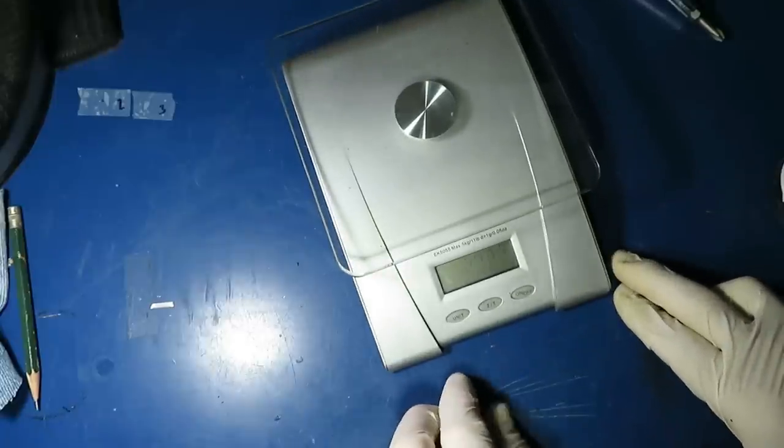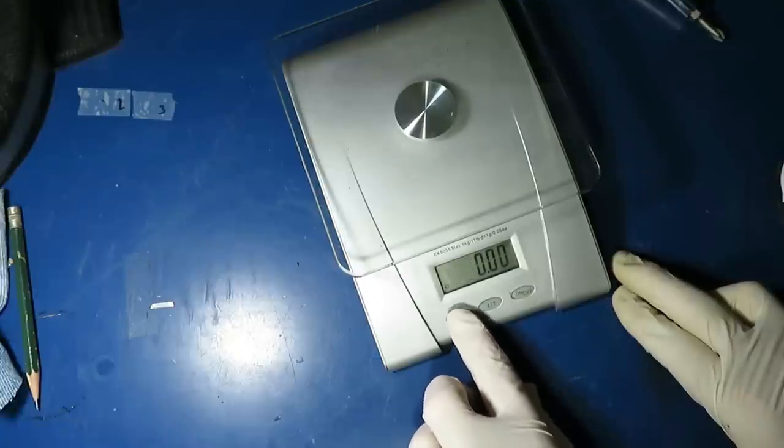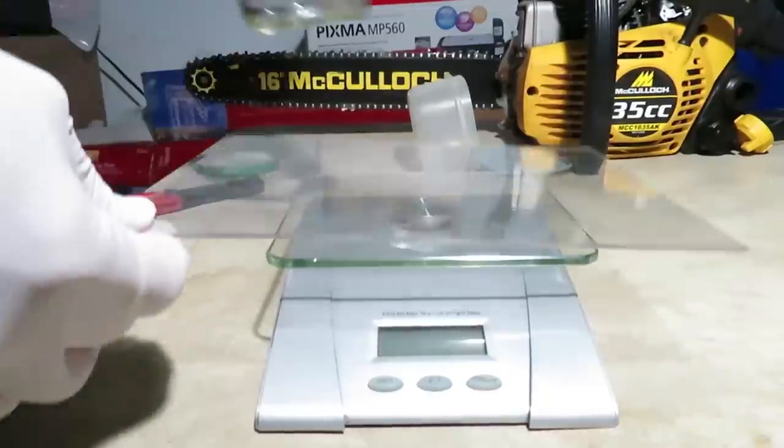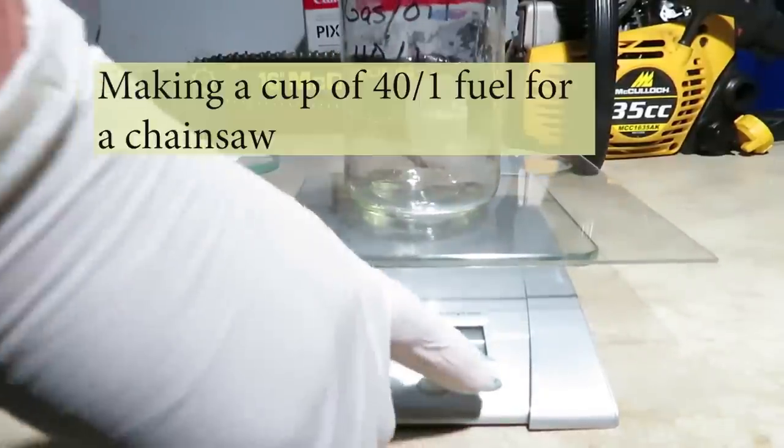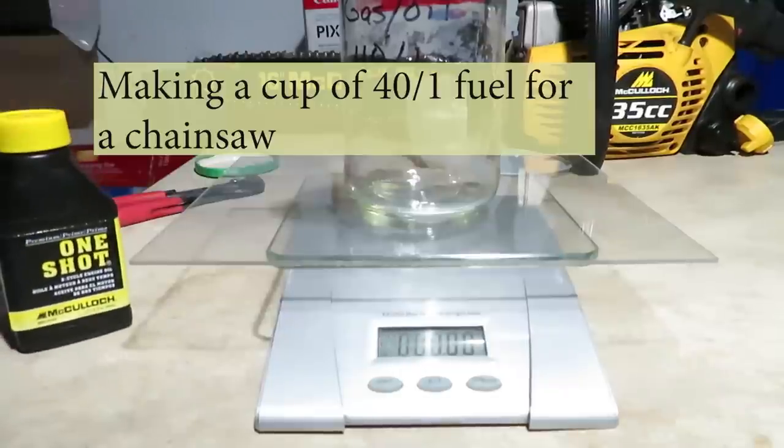It's on. Let's see if it works any better now. Oh yeah. Let's use this scale. I've got a little piece of plexiglass on here because I'm not using it for food today. And so we're going to make some fuel oil mixture for a chainsaw.